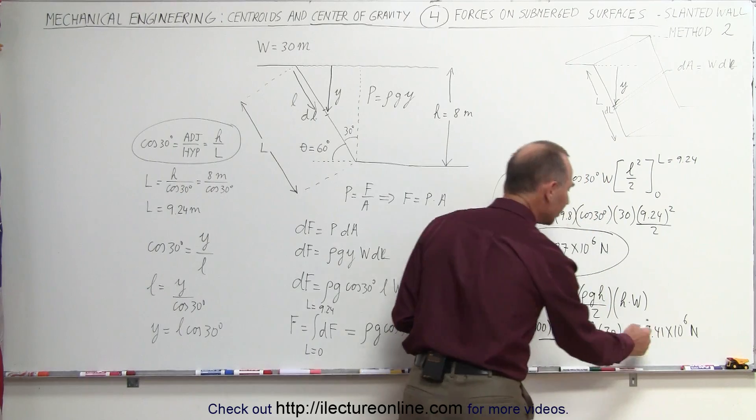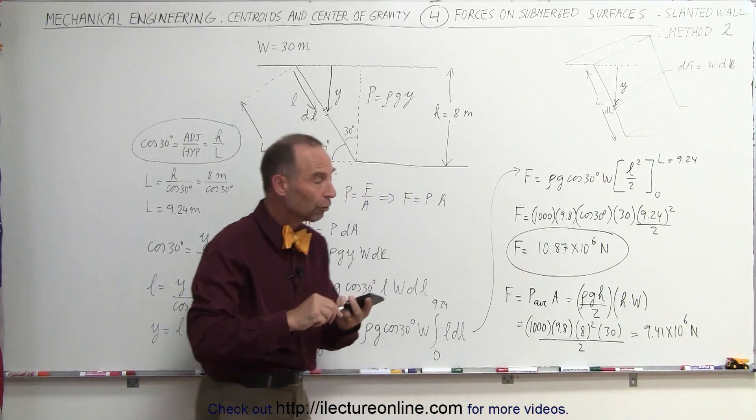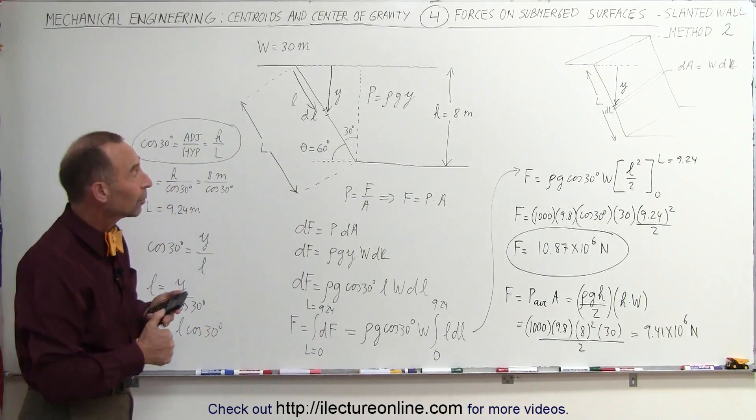Notice 9.4 million newtons, 10 point, almost 10.9 million newtons for comparison. So you can see that with a slanted dam, you have a greater total force.